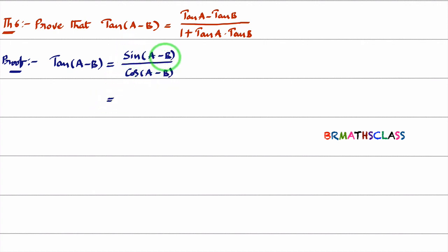In theorem number 2, we know the formula for sin(A-B). The formula is sin A cos B minus cos A sin B. The formula for cos(A-B) is...